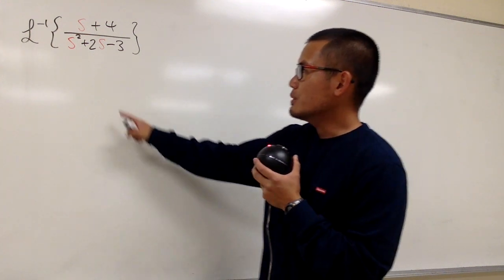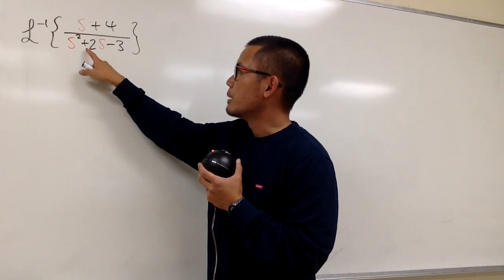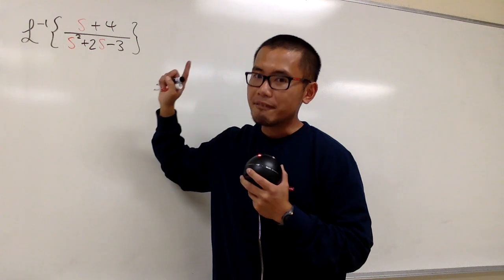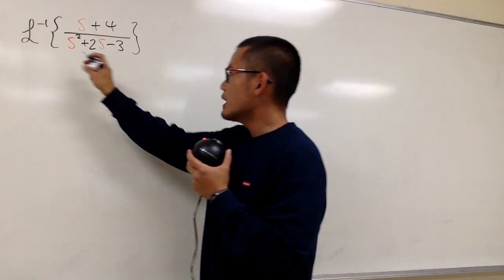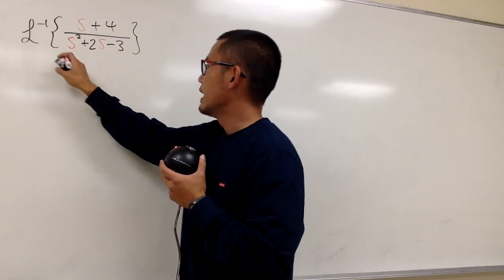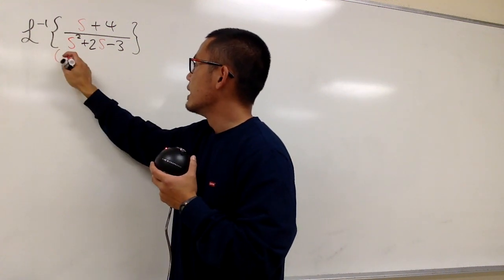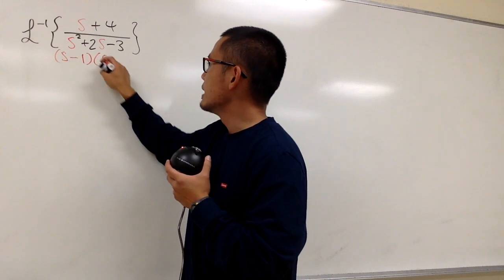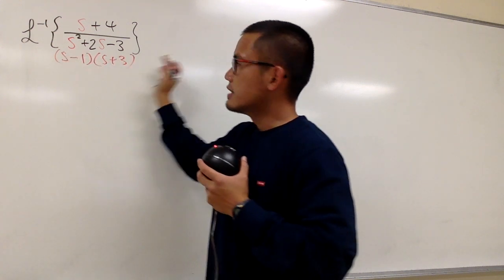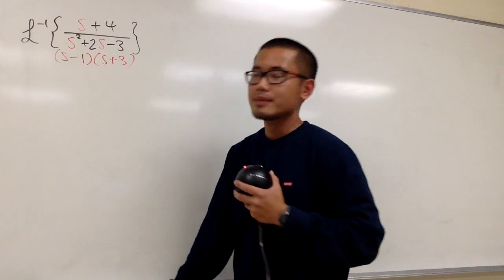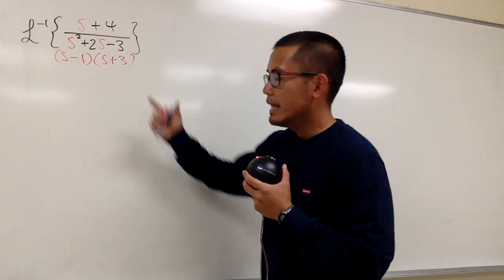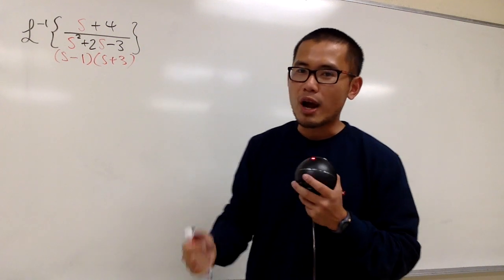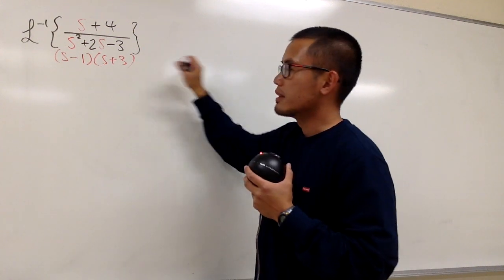But if you notice the denominator, s squared plus 2s minus 3, we can factor that. So let's go ahead and factor this, and we will get (s minus 1) times (s plus 3). In this case, we can use partial fractions to break this apart.